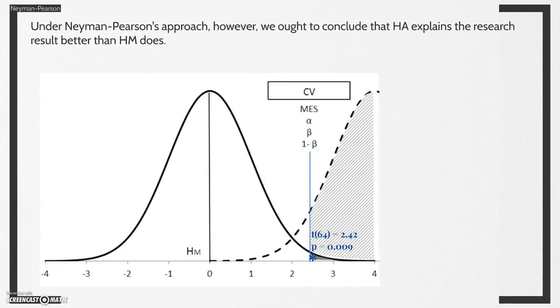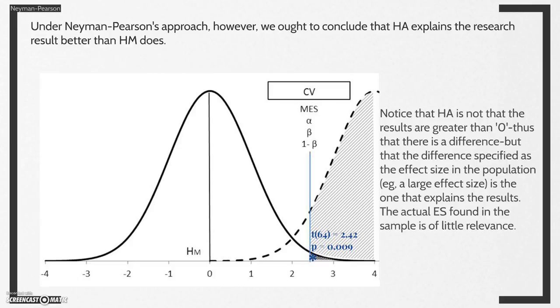Under Neiman-Pearson's approach, however, we ought to conclude that the alternative hypothesis explains the research result better than the main hypothesis does. Notice here that the alternative hypothesis is not that the results are greater than zero, thus that there is a difference, but that the difference specified as the effect size in the population, that is, for example a large effect size, is the one that explains the results. The actual effect size found in the sample is of little relevance.